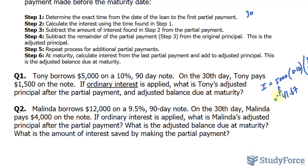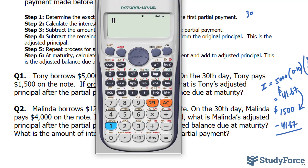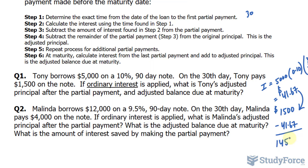In step three, subtract the amount of interest found in step two from the partial payment. The partial payment was $1,500, and we subtract $41.67. Using our calculator, 1,500 minus 41.67 gives us $1,458.33.